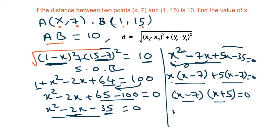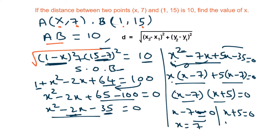Either x minus 7 = 0 or x plus 5 = 0. Transposing gives x = 7 or x = minus 5. So the value of x is either 7 or minus 5.